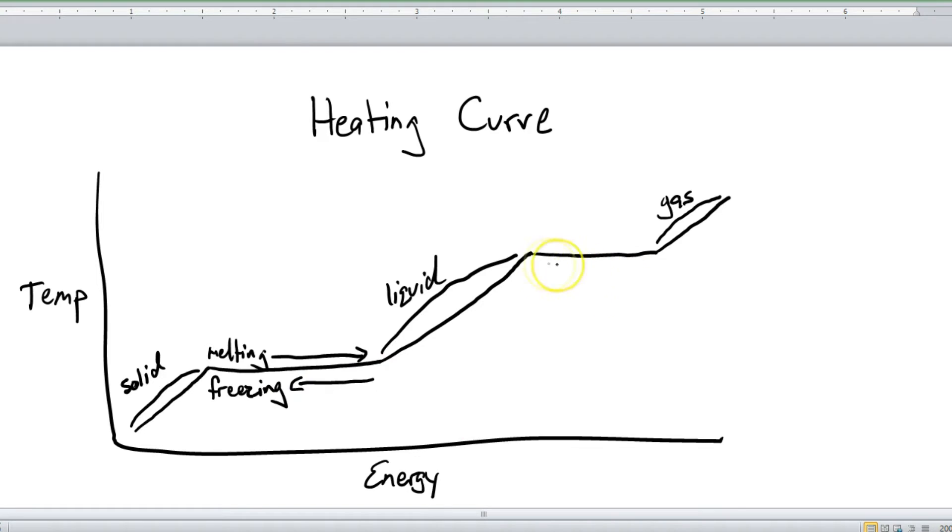The second flat section, so liquid to gas, that's called vaporizing. So that's left to right. The other direction, gas to a liquid, well that's called condensing. Right to left.